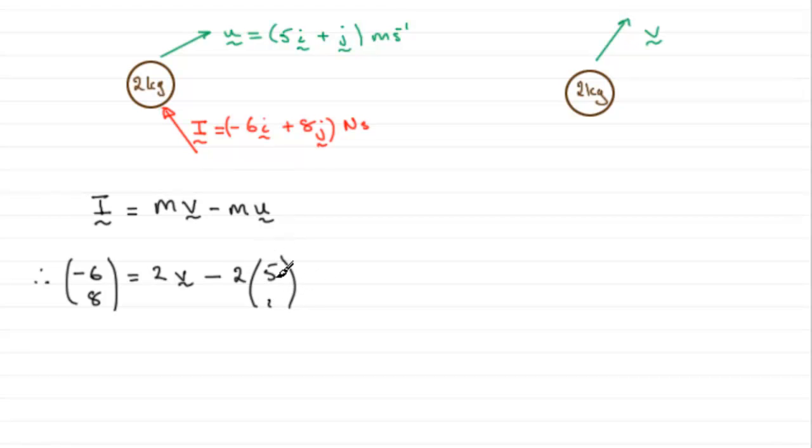Now, this expands to (-10, -2), and I could add that to the other side, so we've got 2v equals (-6, 8) plus (10, 2). If we do that, let's just come down here.